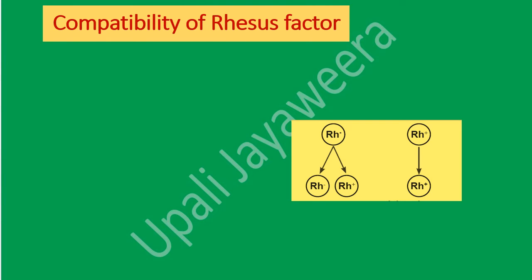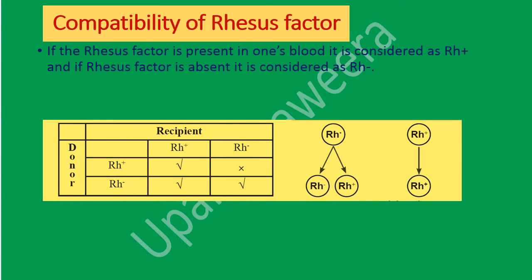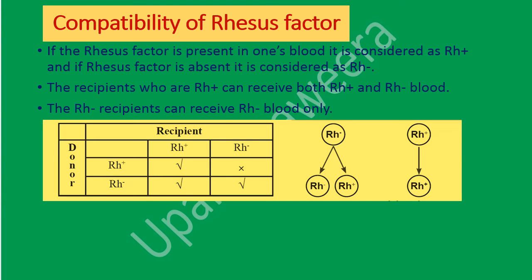Now we will find out about compatibility of the Rhesus factor. If the Rhesus factor is present in one's blood, it is considered Rh positive. If the Rhesus factor is absent, it is considered Rh negative. Recipients who are Rh positive can receive both Rh positive and Rh negative blood. You can understand this by the given chart. If the recipient is Rh positive, both Rh positive and Rh negative can be donors. If the recipient is Rh negative, the donor should be Rh negative.